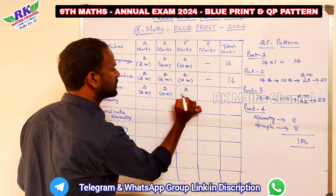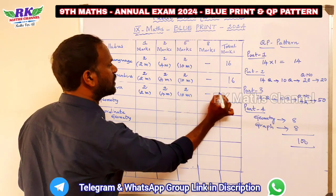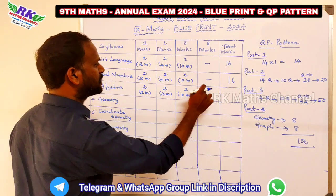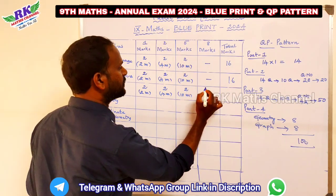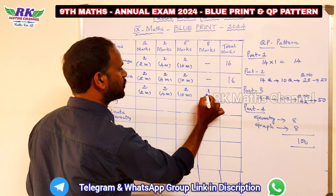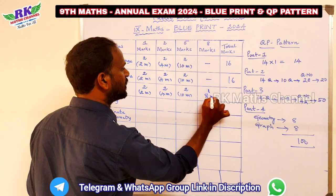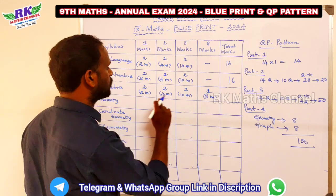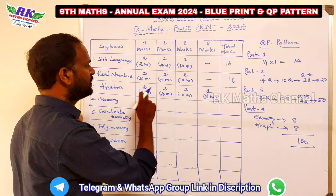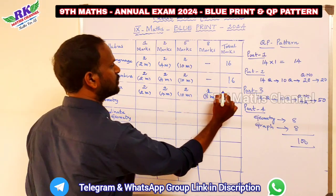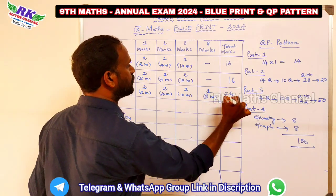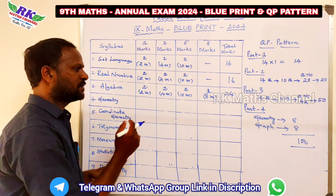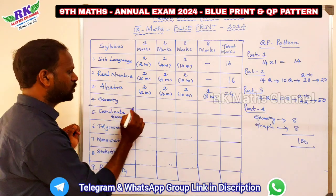Looking at this section: 2 questions carry 4 marks and 2 questions carry 10 marks. Adding 8 marks, the total comes to around 24 marks for coordinate geometry.